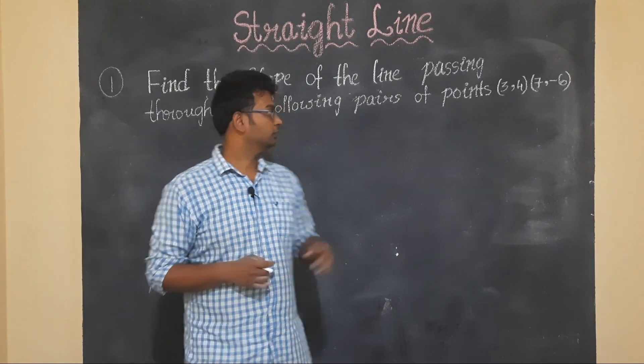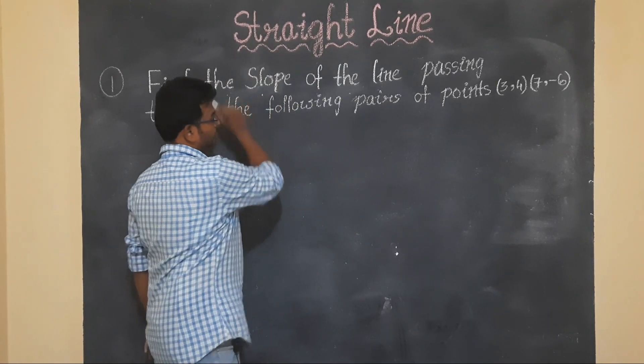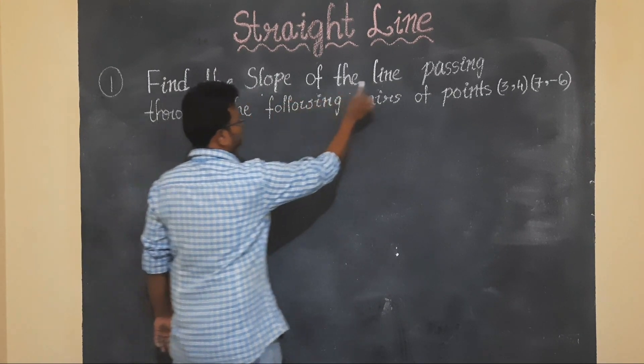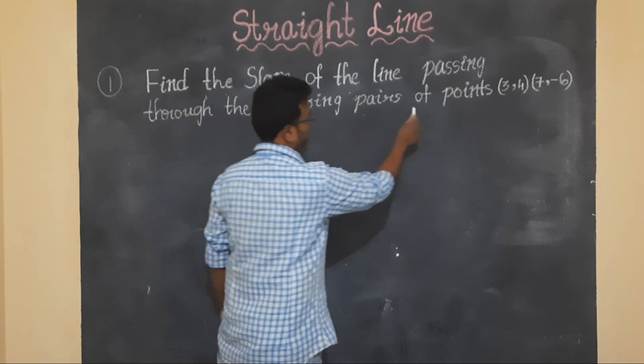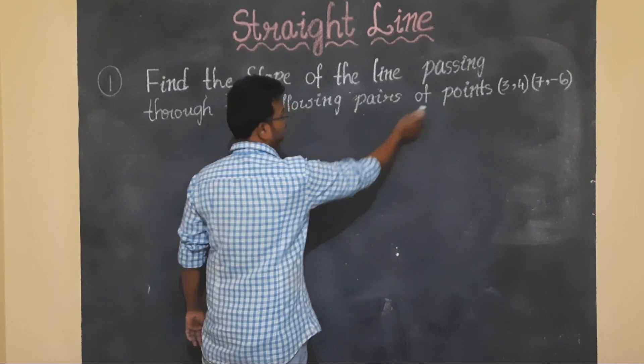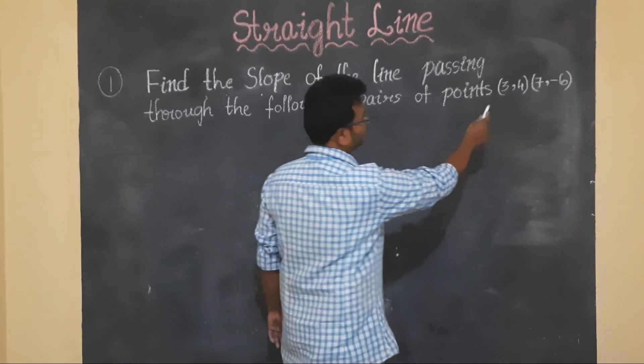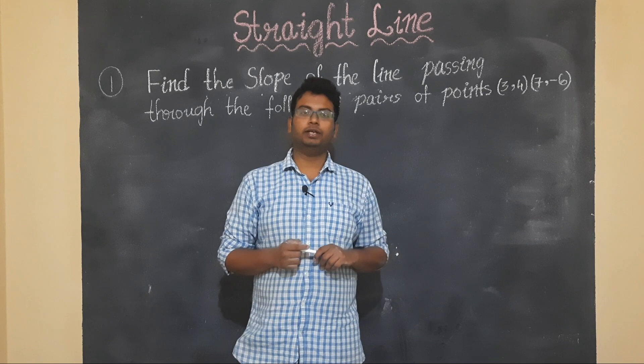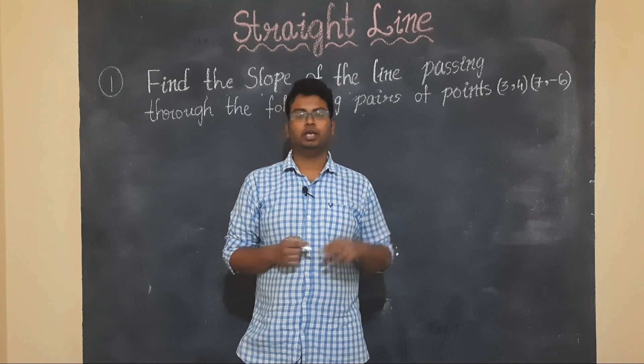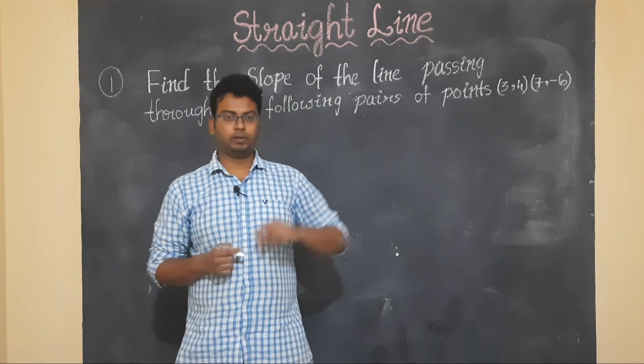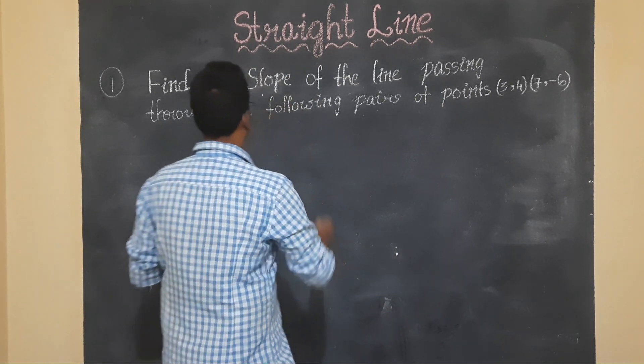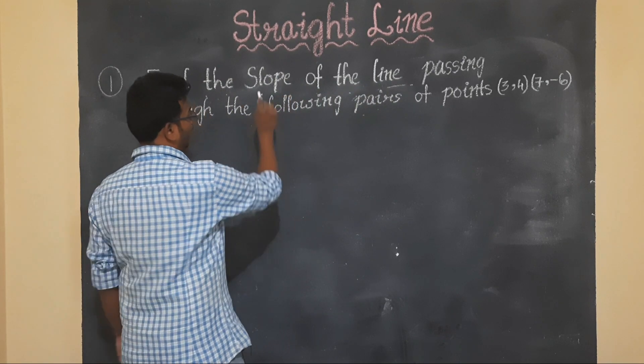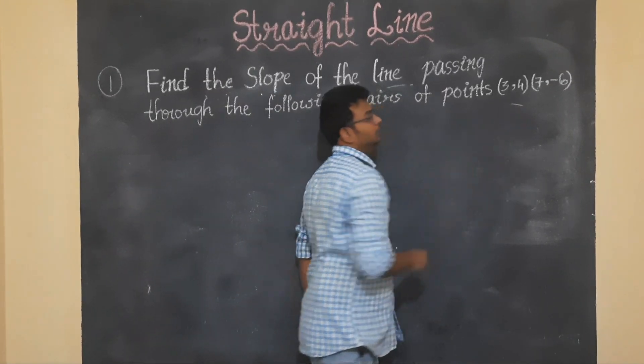Students, now another type of method for finding slope. Find the slope of the line passing through the following pairs of points 3 comma 4 and 7 comma minus 6. So previous question was equation of line is given, find slope. Here, two points are given for the line.